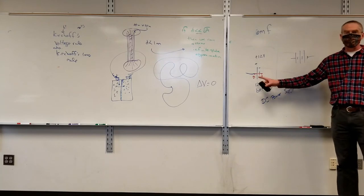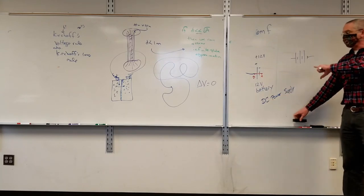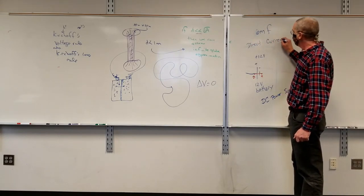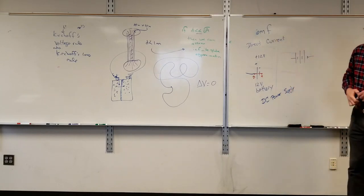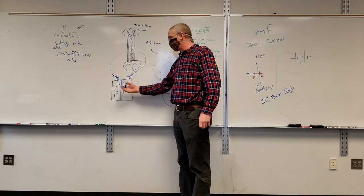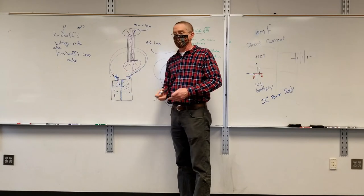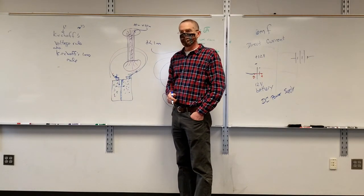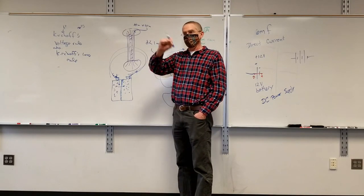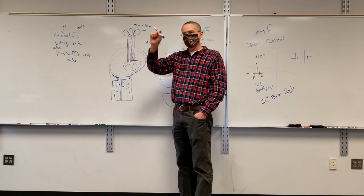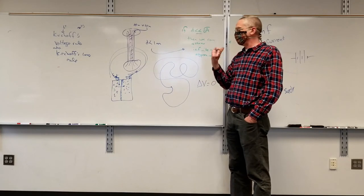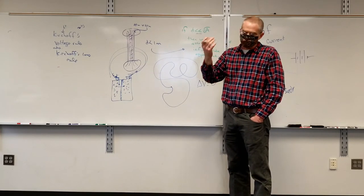I'll call it a battery, I'll call it a DC power supply. The DC part — direct current. In direct current, charges basically flow one way in general. In the next chapter we'll talk about the way that electrons are going to be flowing — counter-clockwise the way I've drawn it. In alternating current, the electrons basically move one way and then go back and forth — that's AC. DC only goes one way.